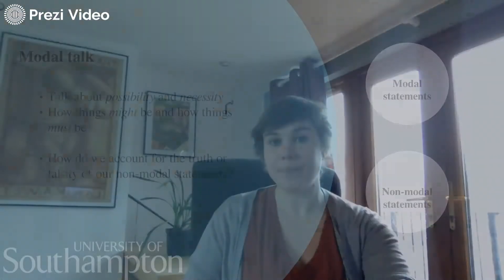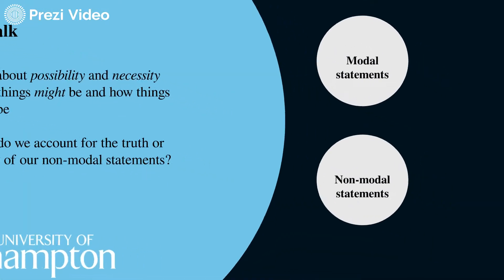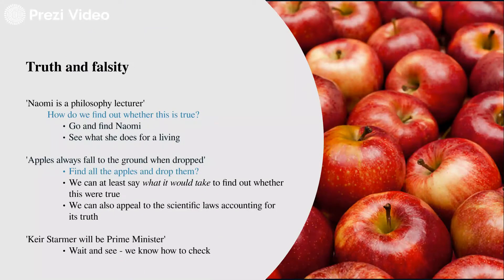In order to understand the problem I'm going to talk about, it's interesting first to think about how we account for our ordinary sentences that aren't about how things have to be or might have been, but rather are just about how things are — our non-modal statements. When we say a sentence like 'Naomi is a philosophy lecturer,' we know what we need to do: go and find Naomi and see what she does for a living. Or consider 'apples always fall to the ground when dropped.' We could find all the apples and drop them, or more realistically, appeal to scientific laws that account for the truth of that sentence.